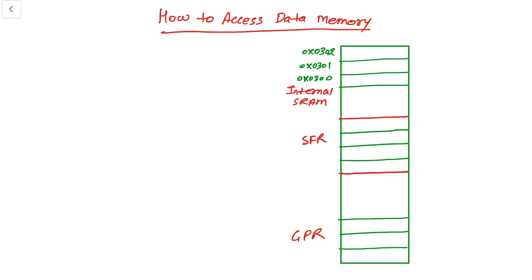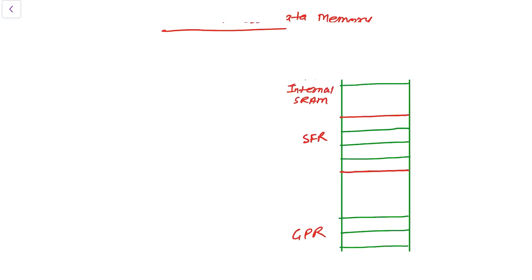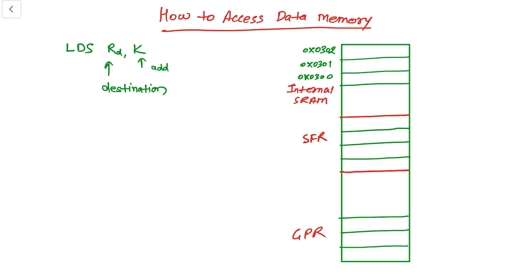LDS stands for load data from the data space, or you can say load direct data from data space. So here we have LDS, then we have Rd and K, where Rd stands for the destination register and K is an address.